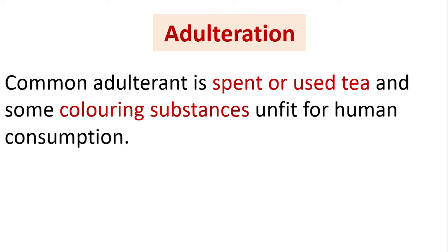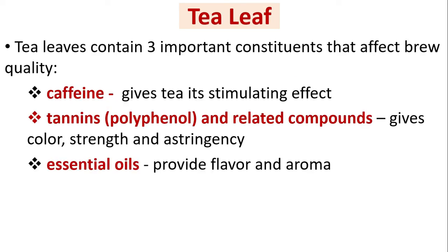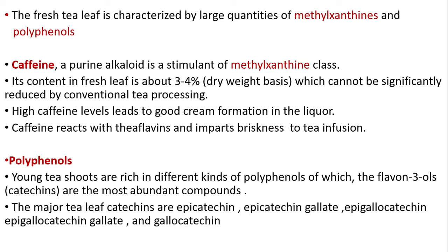Adulteration: the common adulterant is spent or used tea, and some coloring substances unfit for human consumption. Tea leaves contain three important constituents that affect brewing quality: caffeine — which gives tea its stimulating effect; tannins (polyphenols and related compounds) — which give color, strength, and astringency; and essential oils — which provide flavor and aroma. The fresh tea leaf is characterized by large quantities of methylxanthines and polyphenols.